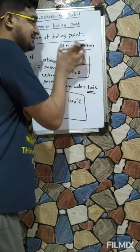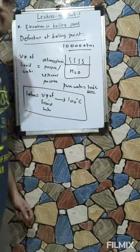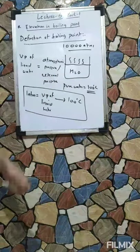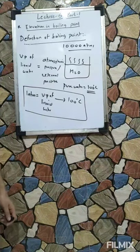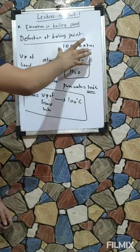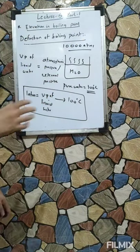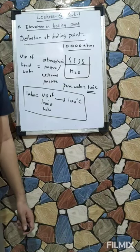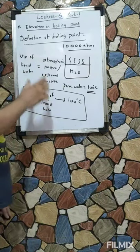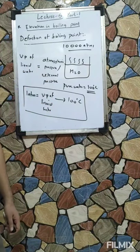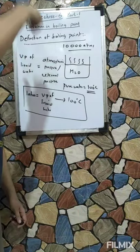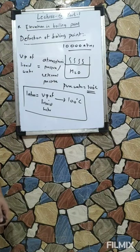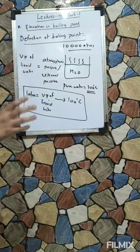On Jupiter, the atmospheric pressure is about 10 atmospheres. So water would boil only when its vapour pressure equals 10 atmospheres — meaning the boiling point of water on Jupiter would be much higher, perhaps 1000 or more degrees Celsius. So if the external pressure is higher, the boiling point of that substance will also be higher.